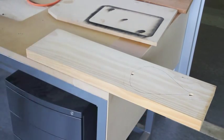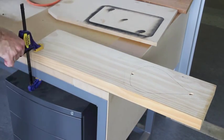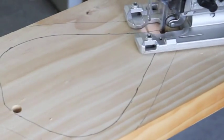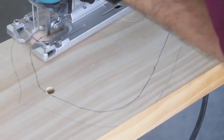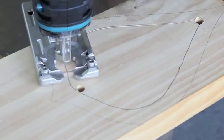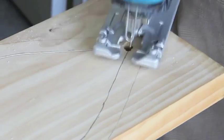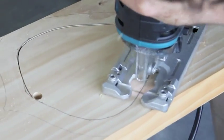Clamp your timber down to a bench. Make sure there's an overhang where you're going to be cutting. Then use the jigsaw to cut out the sound chamber. This doesn't need to be overly accurate because it won't be seen.